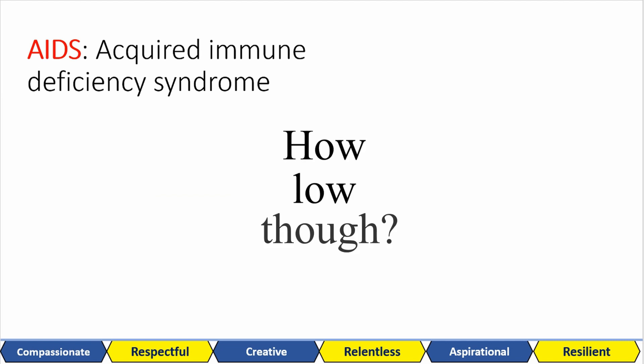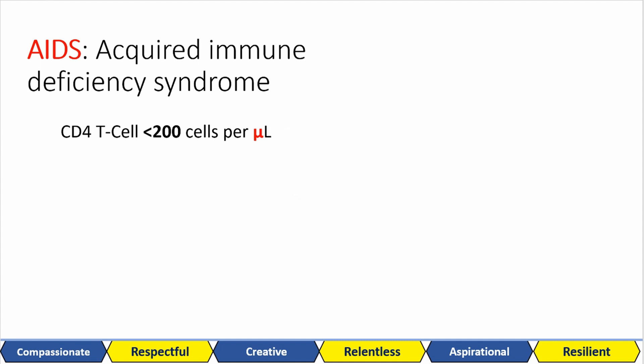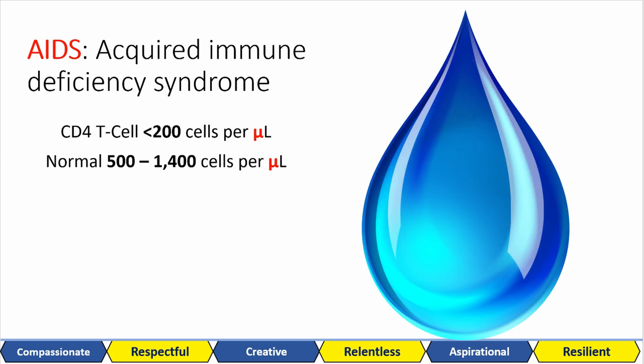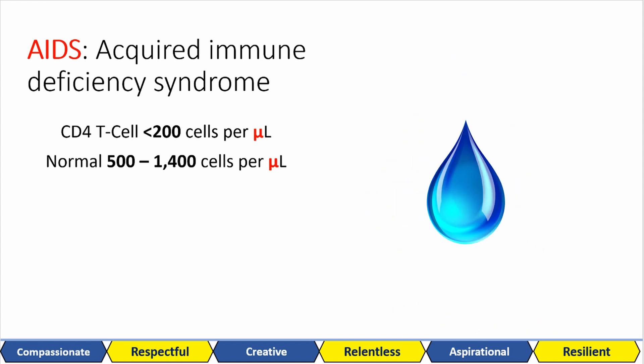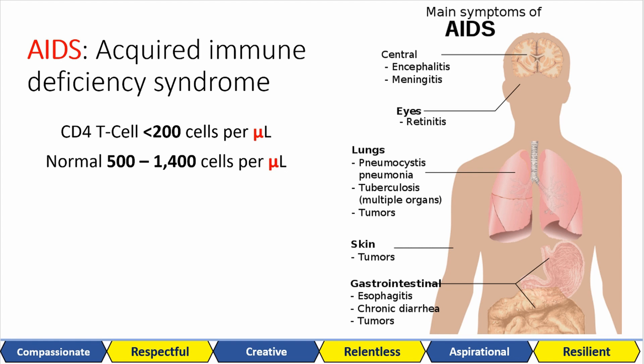If you have fewer than 200 T cells in a microlitre of blood, then it's serious — you have AIDS. The normal range is between 500 and 1400 cells per microlitre. To put that in perspective, a drop of water is roughly 50 microlitres, so imagine a sample 50 times smaller than a drop of water — that's a microlitre. The usual symptoms of AIDS are shown here, and people with AIDS tend to die from pneumonia when their immune system has been severely compromised.